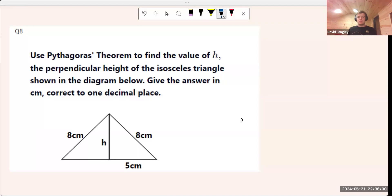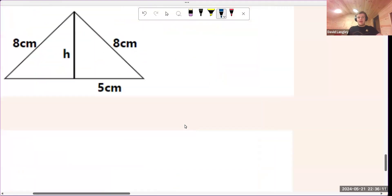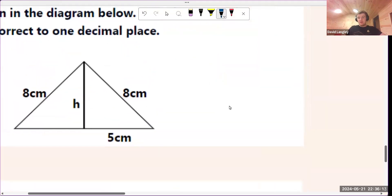Question eight here, the first part, we'll be looking at Pythagoras' theorem. We're told to use Pythagoras' theorem to find the value of h, perpendicular height of this isosceles triangle shown in the diagram below. How are we going to do this? Well, it's telling us to use Pythagoras' theorem, a squared plus b squared equals c squared. So we want to look out for a right angle. A right angle triangle is how we use Pythagoras' theorem, but we were told that this is the perpendicular height, meaning this is the right angle here.